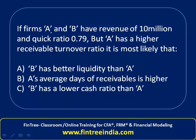We have an interesting question here. Firm A and B have revenues of 10 million and the revenues are the same. Quick ratio of 0.79 for both of them. However, A has a higher receivable turnover ratio. Then it is most likely that B has better liquidity, A's average receivable is higher, or B has a lower cash ratio than A. So let's look at this data carefully.